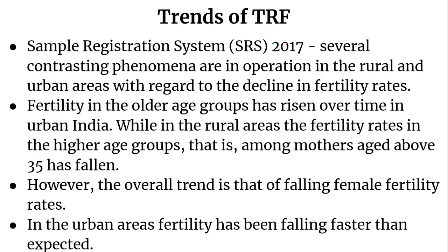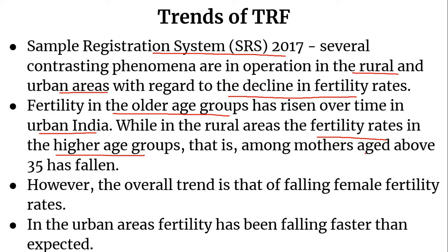Regarding trends in TFR, data from the Sample Registration System 2017 revealed contrasting phenomena in rural and urban areas with regard to the decline in fertility rates. Even though fertility rates fell across all age groups, fertility in the older age groups has risen over time in urban India, while in rural areas, fertility rates among mothers aged above 35 has fallen. The overall trend, however, is that of falling female fertility rates.